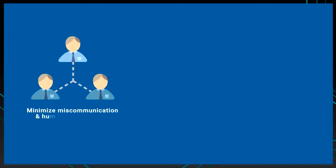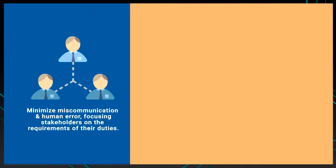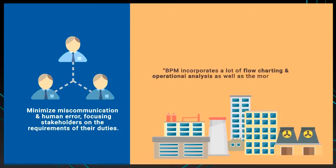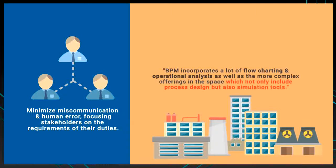The purpose of business process management is to minimize miscommunication and human error, focusing stakeholders on the requirements of their duties. Generally driven by industry roles, business process management incorporates a lot of flowcharting and operational analysis, as well as more complex offerings in the space, which not only include process design but also simulation tools.